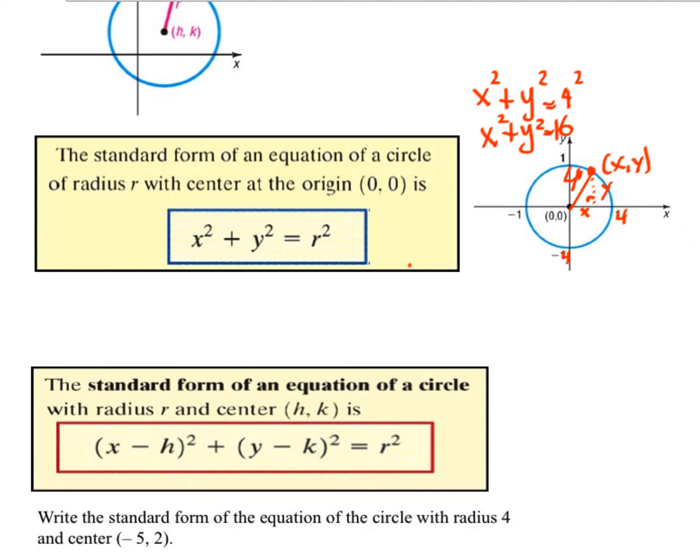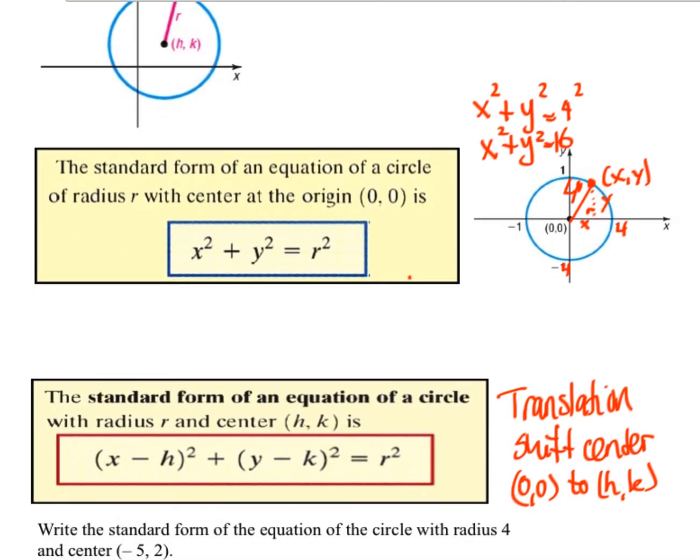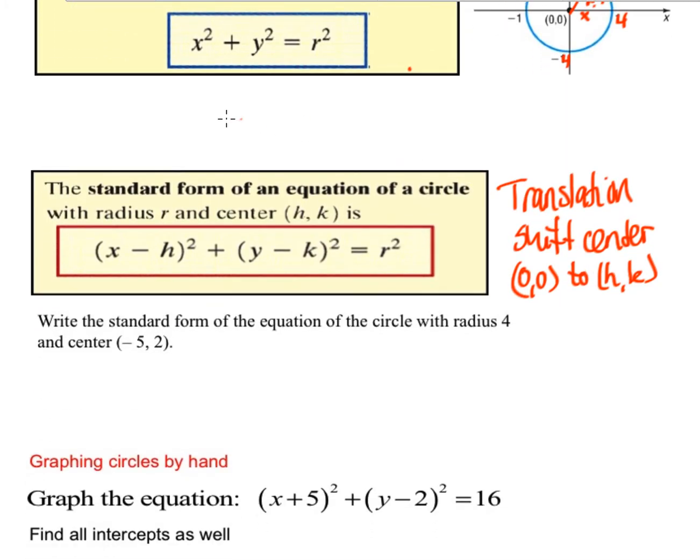If the center is at (h,k), then (x-h) and (y-k) ends up being the way that you write this. And that's based on a translation. So you are shifting the center from (0,0) to (h,k). And this looks a little bit like quadratics when we did this with quadratics.